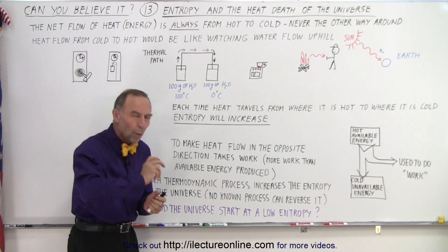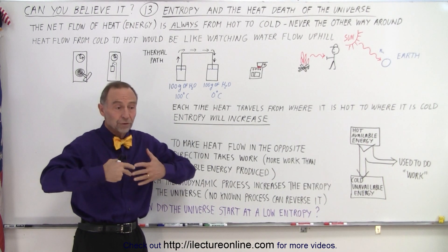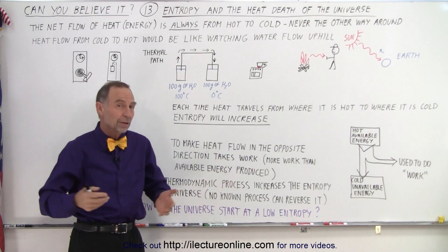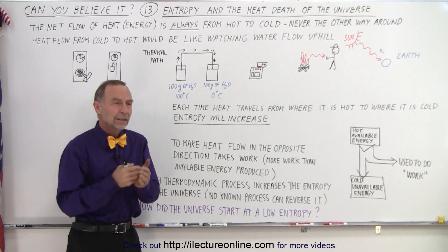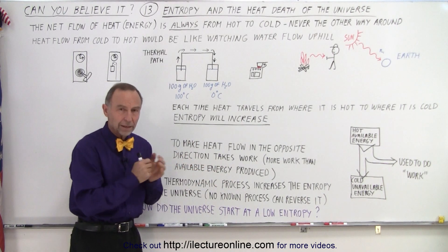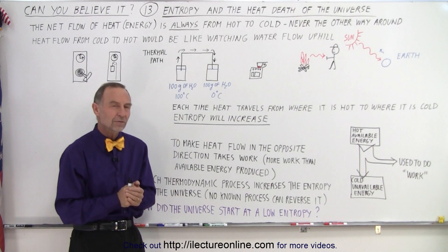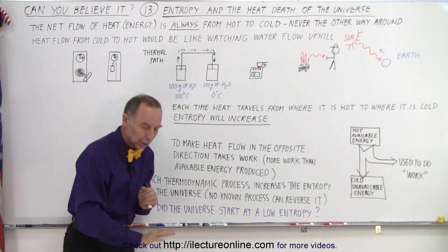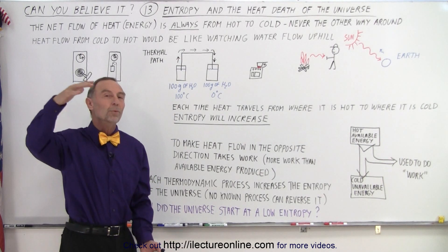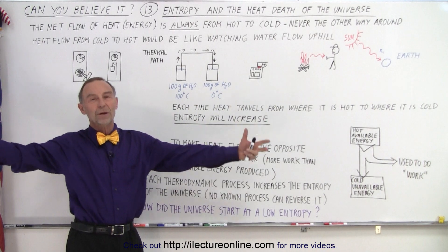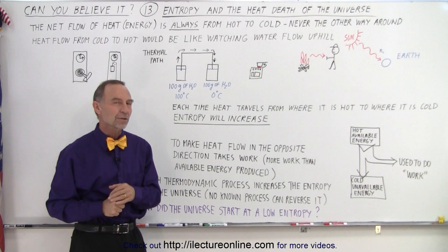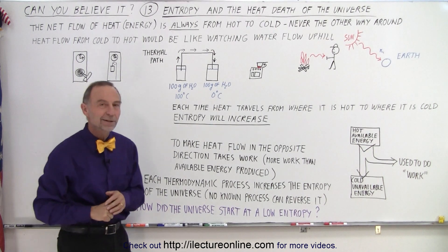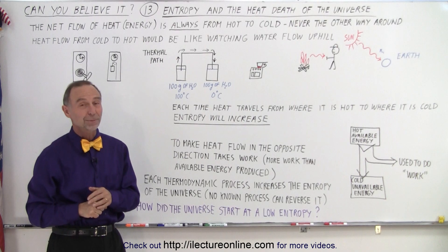Who wound up the universe? For the universe to continue providing energy as it has for more than 13 billion years — with heat always flowing from hot to cold and entropy never decreasing — something must have caused the universe to be set into motion at low entropy, so that it can slowly unwind and provide heat throughout the universe for countless billions of years. Essentially, who wound up the clock of the universe? It's hard to believe.